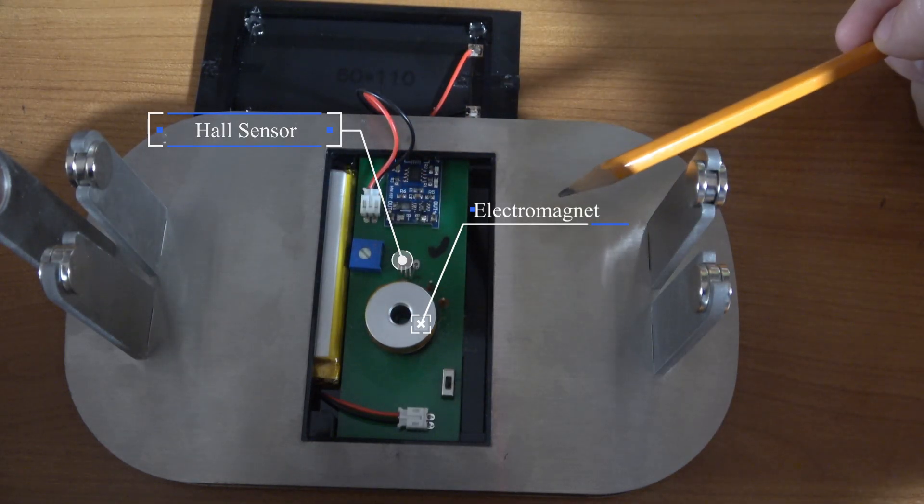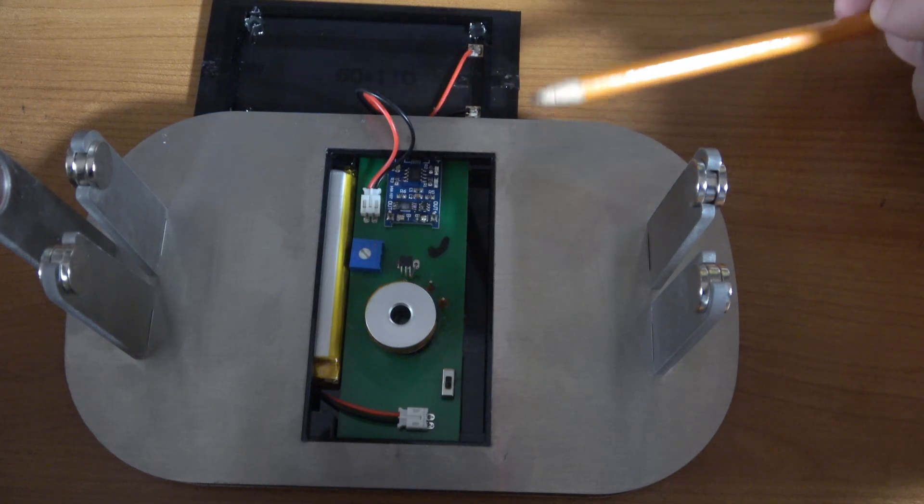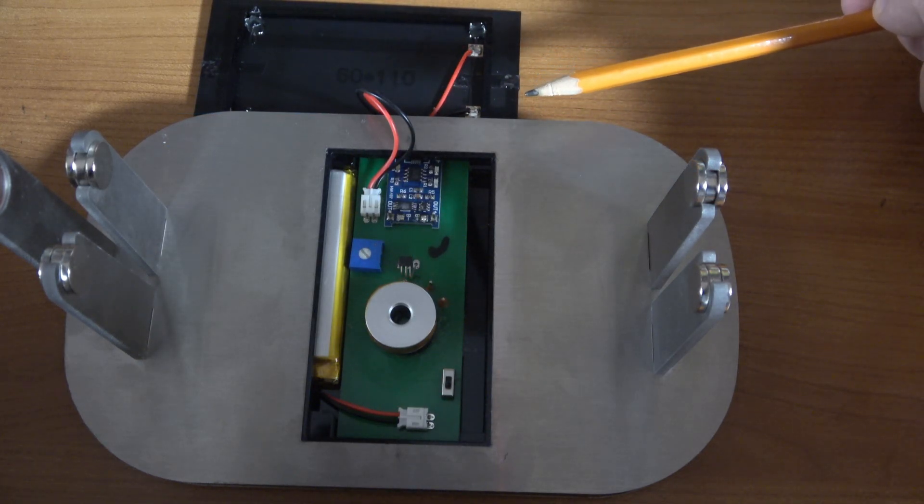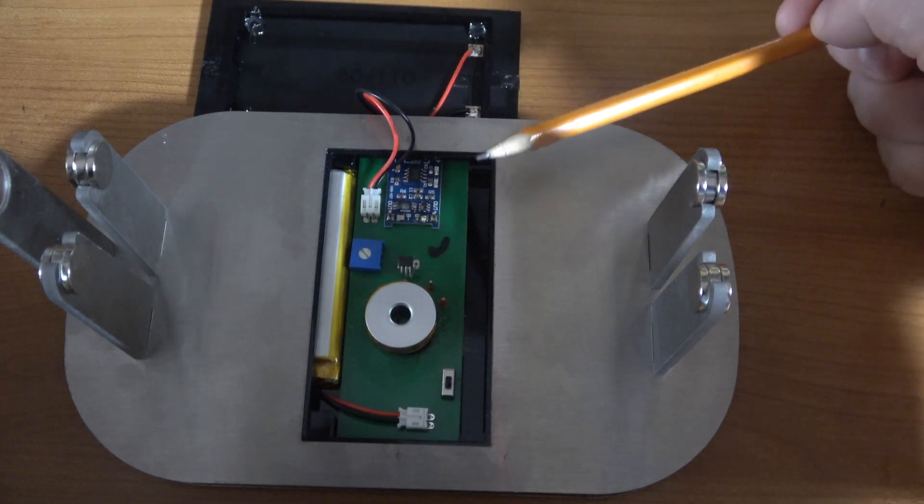The electromagnet pushes the magnet away and the hall sensor turns off. This process repeats itself for every magnet in this contraption.